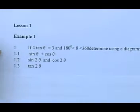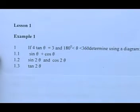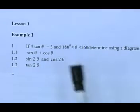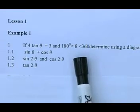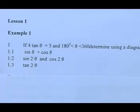If you look at example number one, I hope that you can all see it. It says that if 4 tan θ is equal to 3 and θ is between 180 and 360 degrees, using a diagram, we have to determine firstly sin θ plus cos θ.